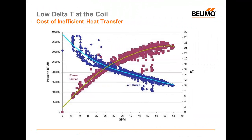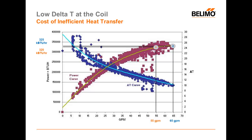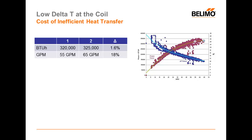Let's take a look at the cost associated with controlling at those two points. Point 1 uses about 55 gallons a minute and achieves 320,000 BTU. Point 2 uses about 10 gallons a minute more and achieves about 5,000 more BTUH into the space. So we have a very small increase in BTU while percentage-wise a fairly large increase in flow. If we examine this on a chart, it takes 18% more GPM and nets us just 1.6% more BTU.